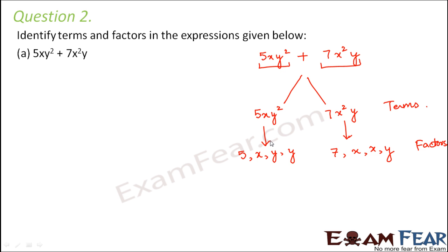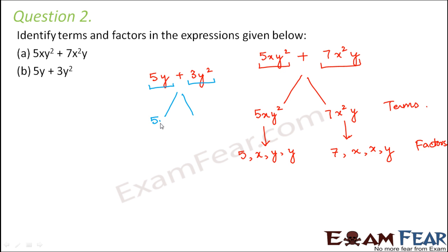The second expression is 5y plus 3y squared. It has two terms: 5y and 3y squared. The factors of 5y are 5 and y. Similarly, 3y squared can be written as 3 into y into y, so 3, y, and y are the factors of 3y squared.